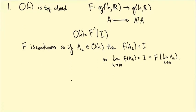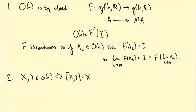Second comment: I said that the Lie algebra should be closed under taking brackets. So in other words, if X and Y are in little o(n), then the bracket [X, Y] — that is XY minus YX — should also be in little o(n). And that is true, and I'm going to leave it as an exercise for you to prove that.